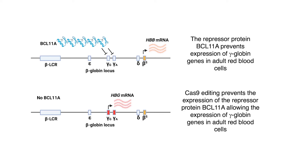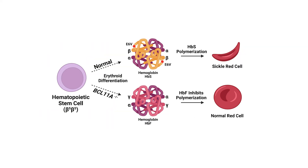A regulatory element can be thought of as a command within the genome that tells a certain gene to get turned on at a specific time. In this case, the regulatory element that's being disrupted no longer tells a particular protein to go and turn off fetal hemoglobin. Since it's not being turned off anymore, it'll be expressed in red blood cells and restore the function of hemoglobin — but now as fetal hemoglobin instead of adult hemoglobin. The red blood cells will no longer change shape; they won't sickle.